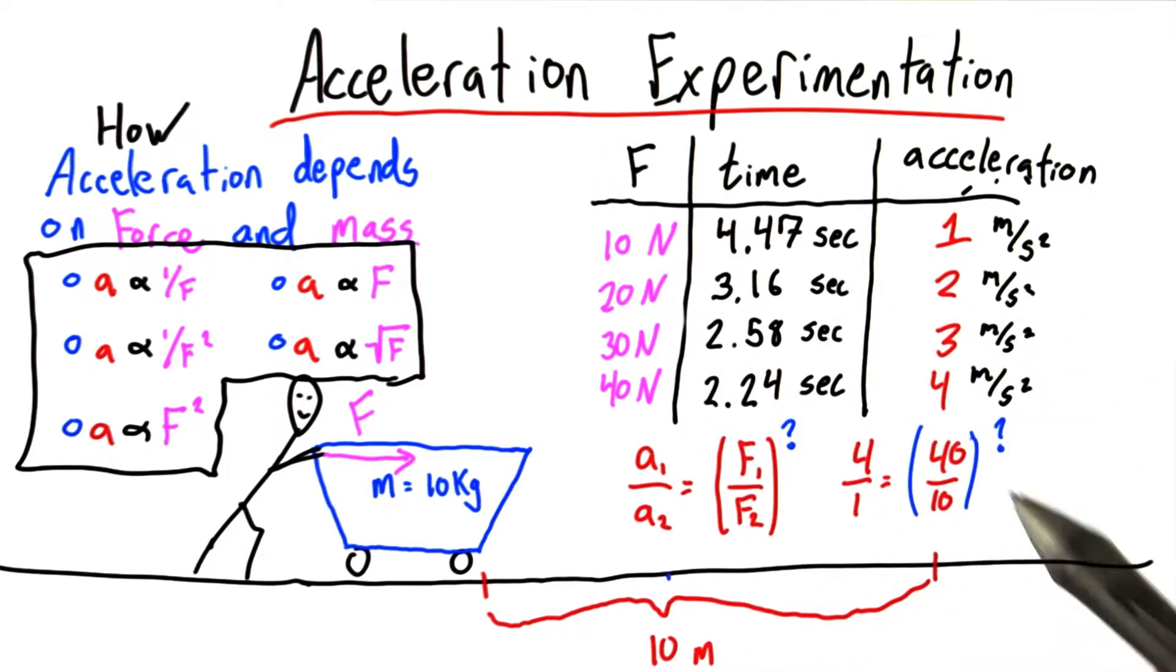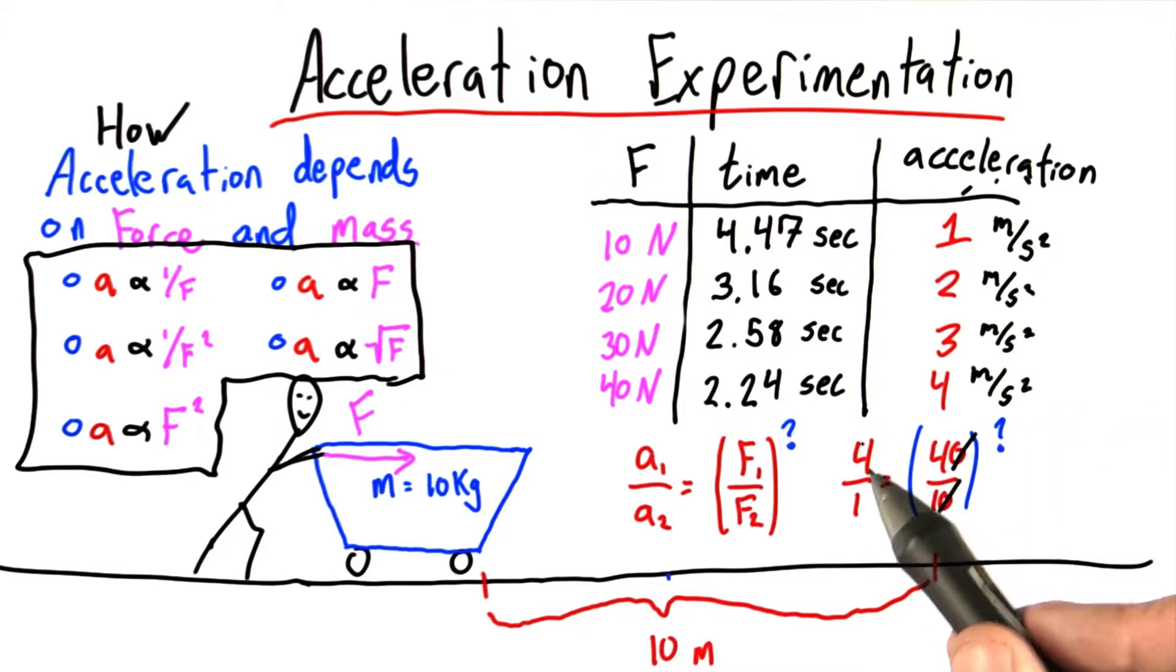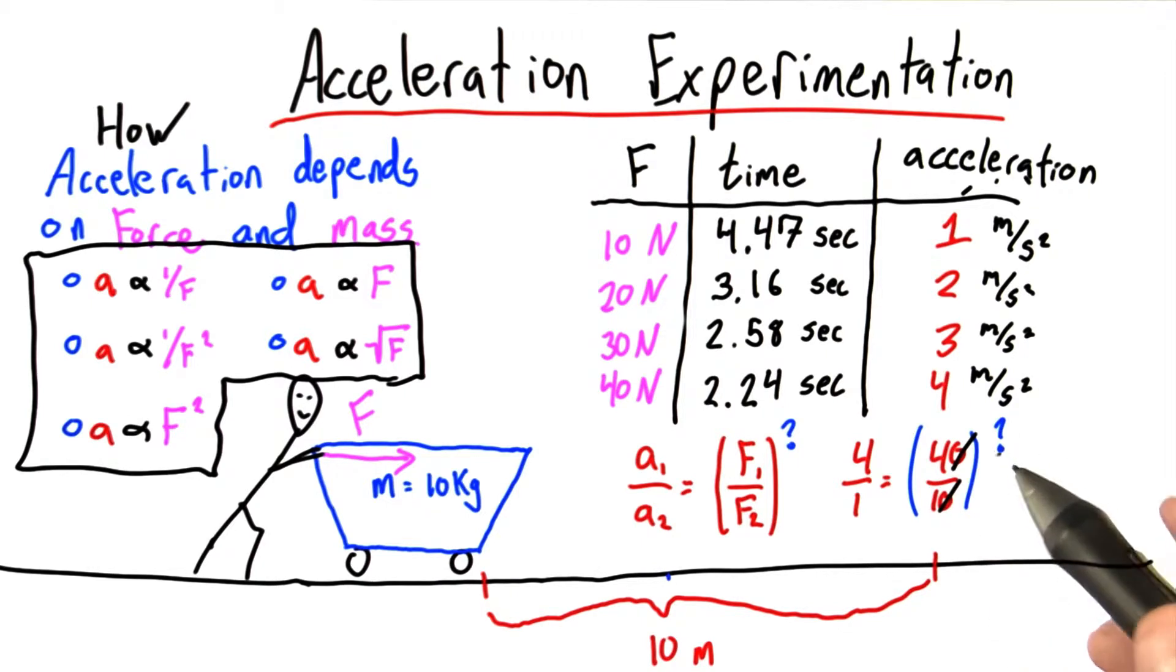This just says 4 over 1 equals 40 over 10, and I'm keeping in mind that I might need an exponent. These zeros cancel, and now we just have 4 over 1 equals 4 over 1 to something. These are identical, so this something is just 1.